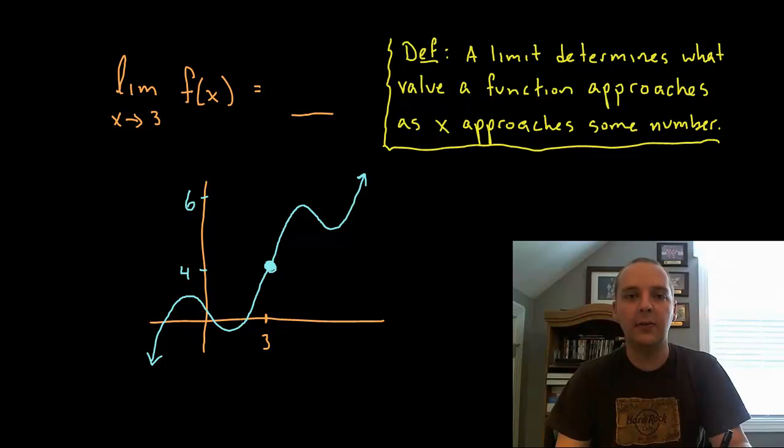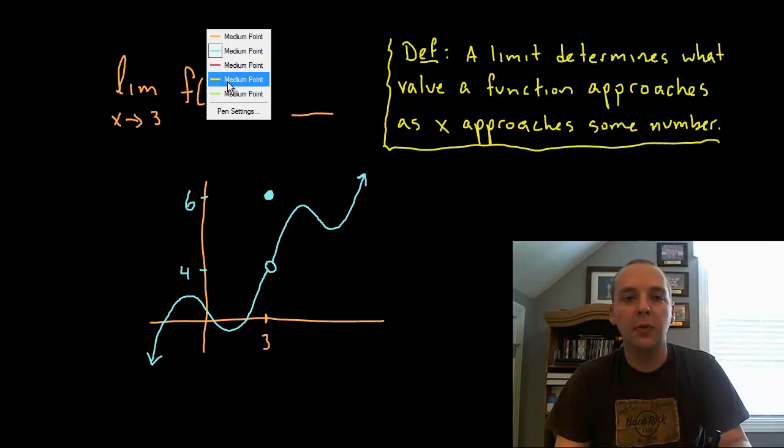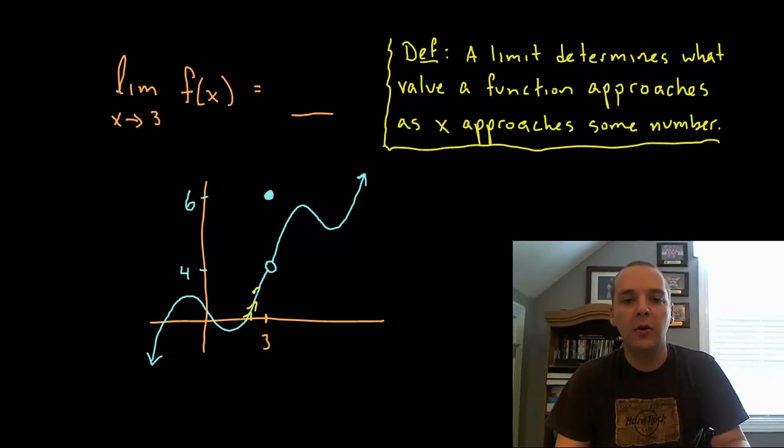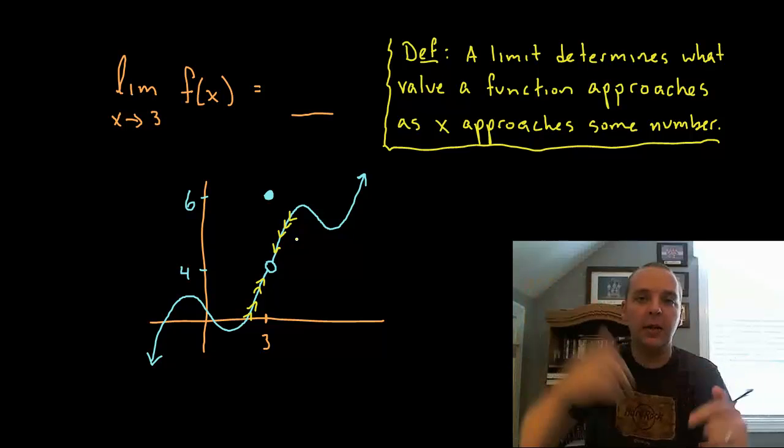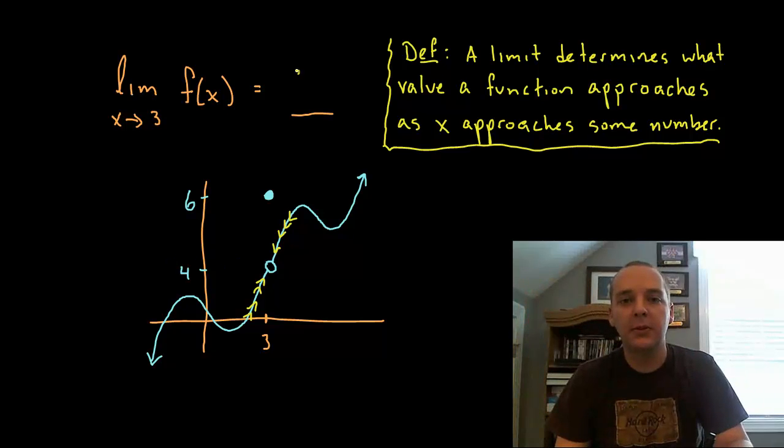So right now this dot is filled in at 4, but what if I remove it, what if I take that dot away and I redefine the y value at 3 to be 6, let's say, right? And then I ask this question again, what's the limit as x goes to 3 for this function? Well let's read the definition again, a limit determines what value the function approaches as the x's get closer to 3. So do you think the answer would be 4, or do you think the answer would be 6? Well hopefully you said 4, because the limit is still 4. Because if you see my yellow arrows, they're still pointing like big flashing yellow lights towards 4, and so this would still be the limit.